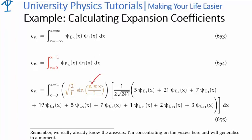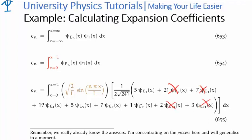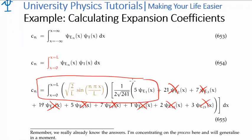For example, when n=1, this will be psi sub e sub 1, which is exactly what we have here, meaning all the other terms won't be orthonormal and will integrate to zero. Simply we'll be left with just that term. When you actually calculate this particular integral, you'll be left with 5 times one over two root 241, and so on.